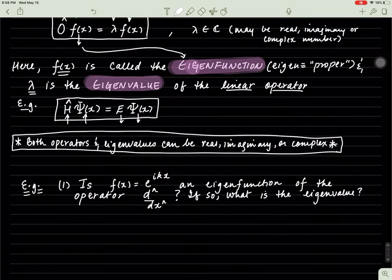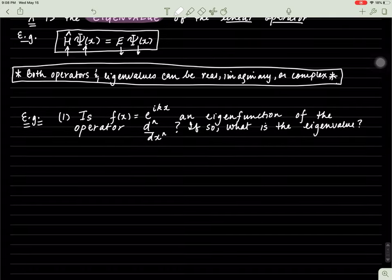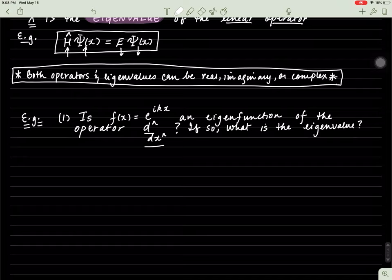The question we're going to address is: for the function f of x equal to e to the exponent ikx, is it an eigenfunction of this operator? And if it is, what is the eigenvalue? Remember, in order to be an eigenfunction, it needs to satisfy this condition.